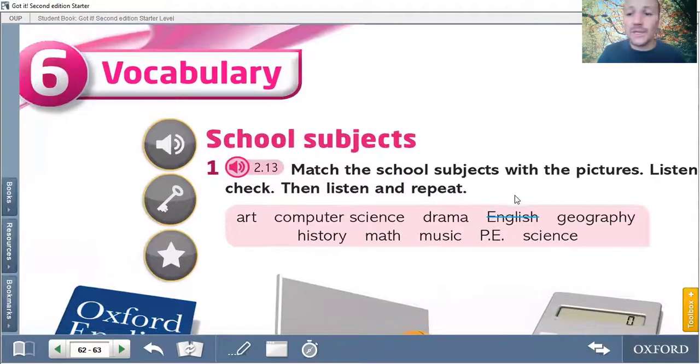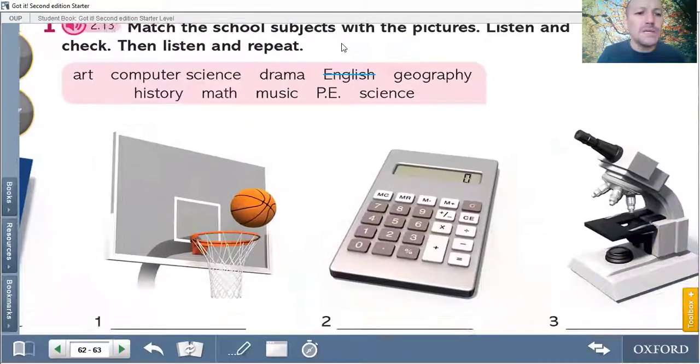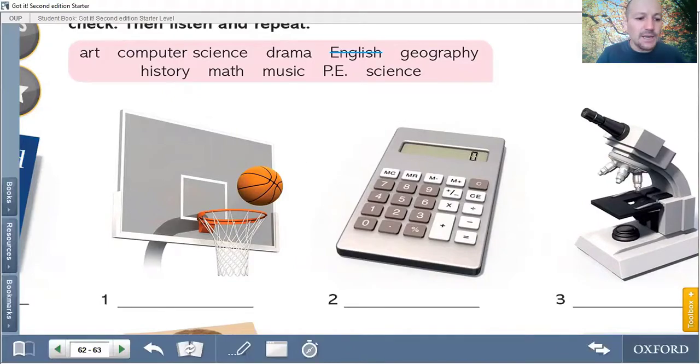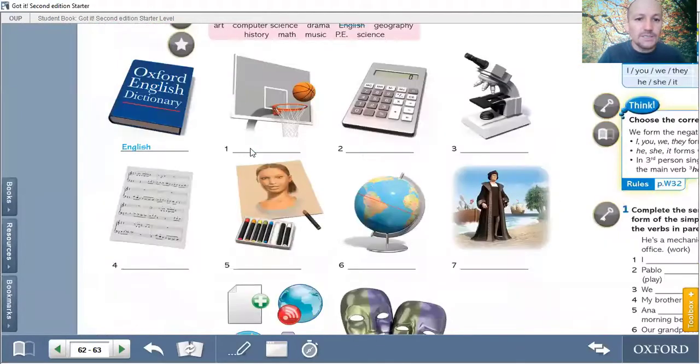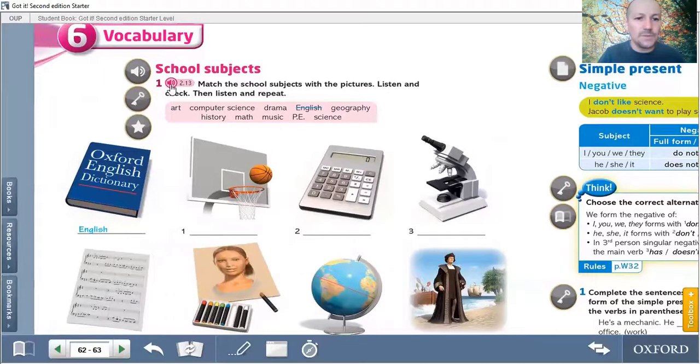So the school subjects in Spanish are asignaturas. So we're going to read all the school subjects, this one, art, computer science, drama, and then we're going to listen an audio and we're going to write. I'm going to write the word below the picture. So pay attention please and pick up your pencil and your book to listen all these school subjects. Attention please.